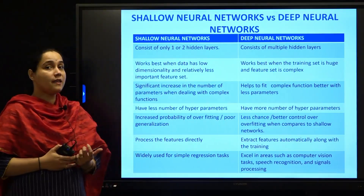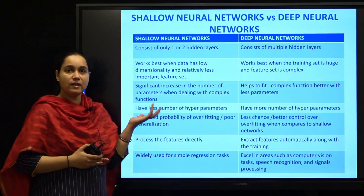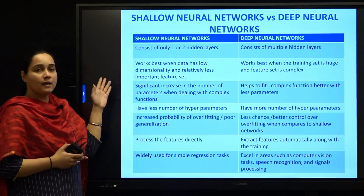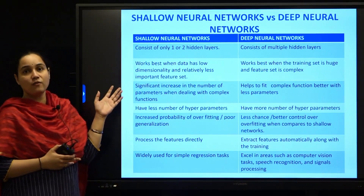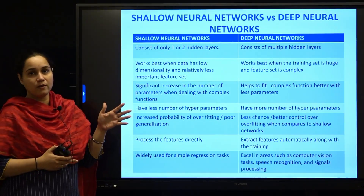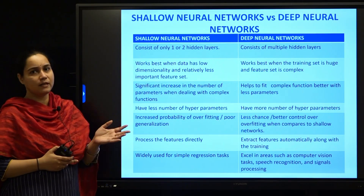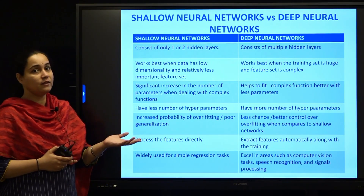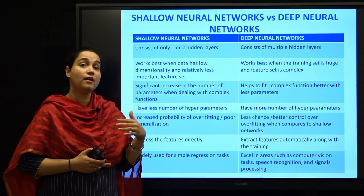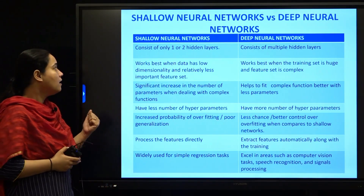The first difference is the number of layers. A shallow neural network has an input layer, an output layer, and either one or two hidden layers — not more than that. Compared to deep neural networks, you can have multiple hidden layers.